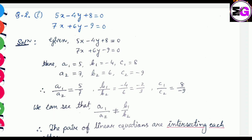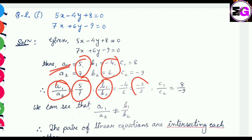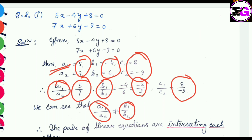Now we find the ratios: a1 by a2 equals 5 by 7. Then b1 by b2 equals minus 4 by 6, that is minus 2 by 3. And c1 by c2 equals 8 by 9. As we can see, a1 by a2 is not equals to b1 by b2. That means both the lines intersect at a single point.